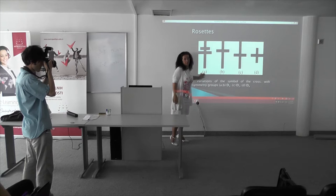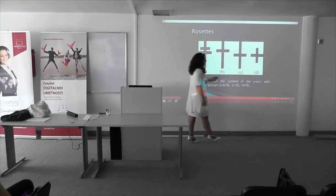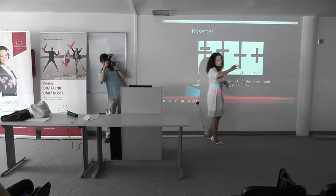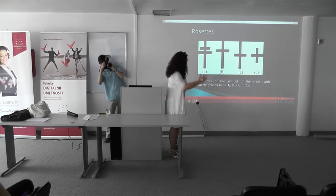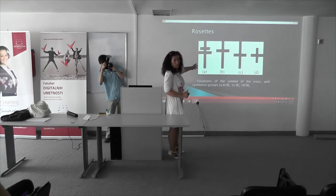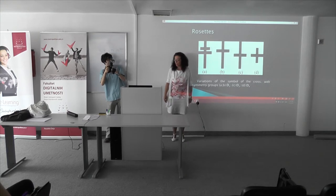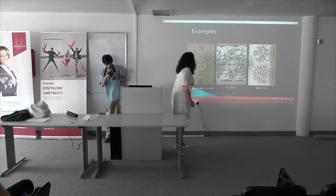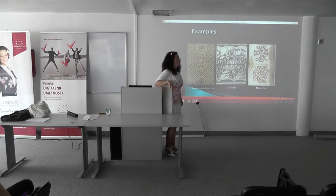For example, the first one only possesses the vertical axis of symmetry. The second one is similar to the previous one. The third one has vertical and horizontal lines. And here you also have diagonals. So it depends on the measurement and relation between horizontal and vertical — the kind of cross that has been used. This is also known as the Russian cross, and this is the usual way we use the cross in our history of art. There are beautiful examples from Kruševac and Nagorčino.